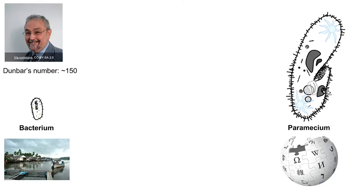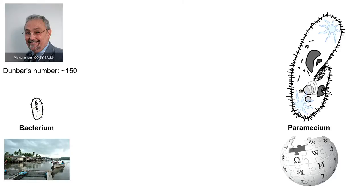Who here has heard of Dunbar's number? Dunbar was a social scientist who looked at how humans organize around villages and social systems. He observed that generally villages don't get above 150 people. He thought there's some cognitive limitation to organizing above a certain scale. When I think about a fishing village and this limit of about 150 people, I think about that bacterium — it lacks substructures that allow it to operate at scale.